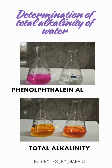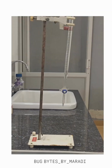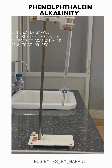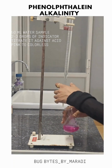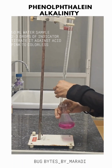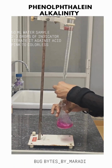Hello, my dear little bugs, welcome back to my channel. Ever wondered how alkaline your water really is? Alkalinity is the water's ability to neutralize acids, mainly due to bicarbonates, carbonates, and hydroxides. To check the phenolphthalein alkalinity, take 50 ml of a water sample and add 2 to 3 drops of phenolphthalein indicator, then titrate it against acid.